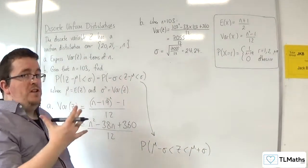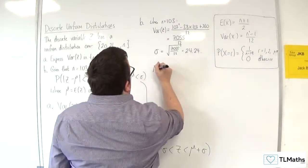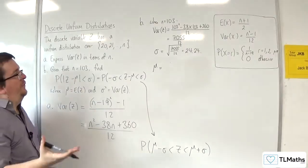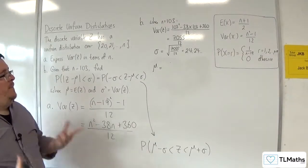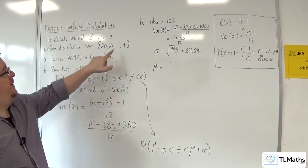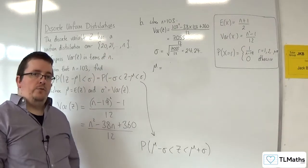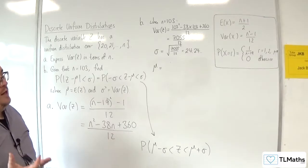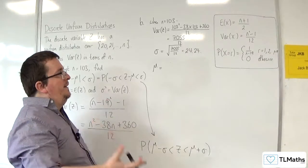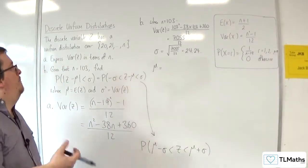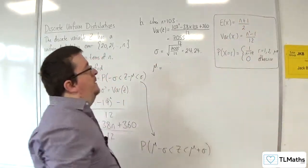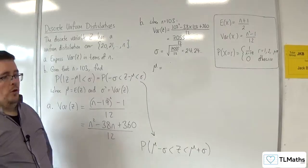We now want to find μ. μ could be found fairly easily because essentially it's the median position in this list from 20 up to 103. If you want to use the formulae, we've got to be a little bit careful because remember that n is not the same as this n up here. We do have to watch our step.